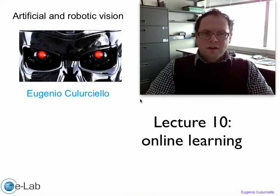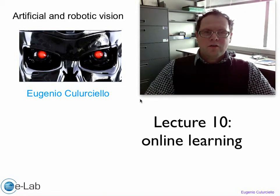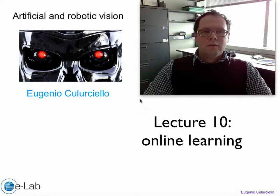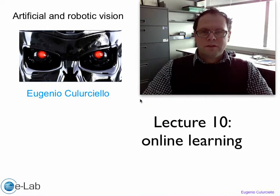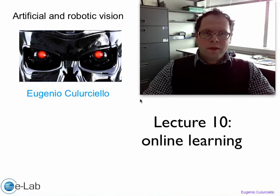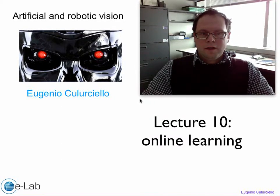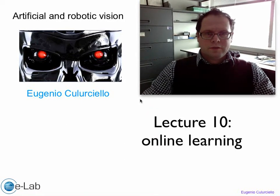Hello everyone. Today we will talk about online learning, a system that can learn on the fly the position of objects and track them on the visual field. This is probably one of the best applications of deep networks and machine learning and vision systems, and it's probably the most fundamental component of a robotic vision system.